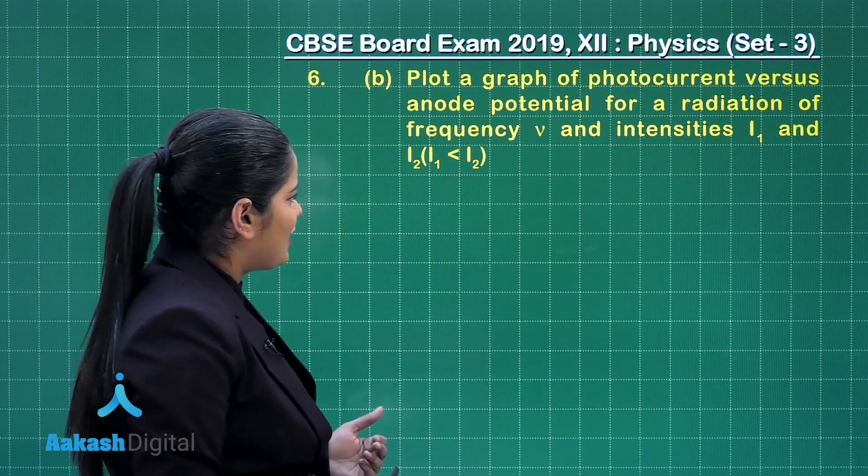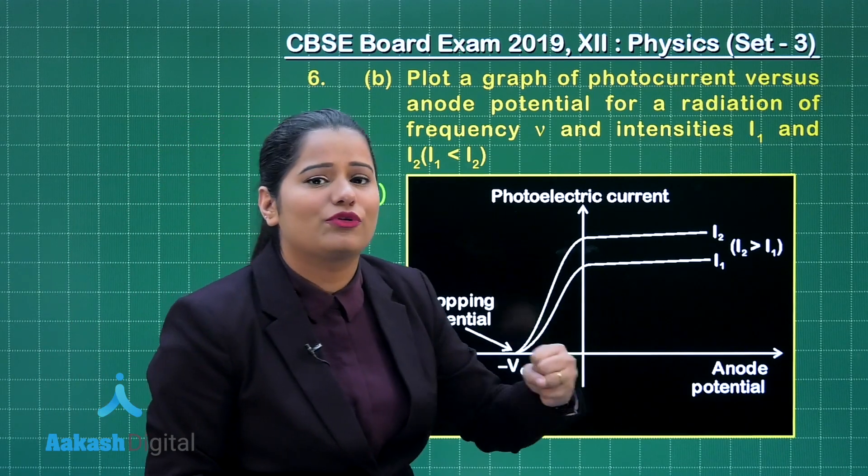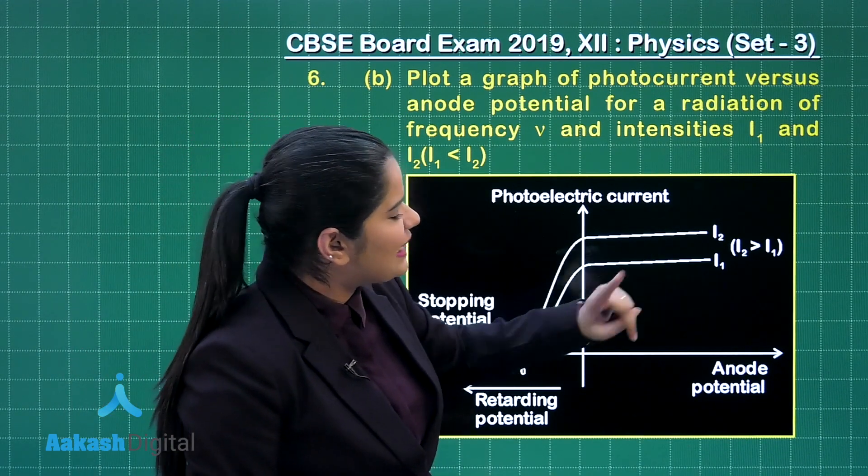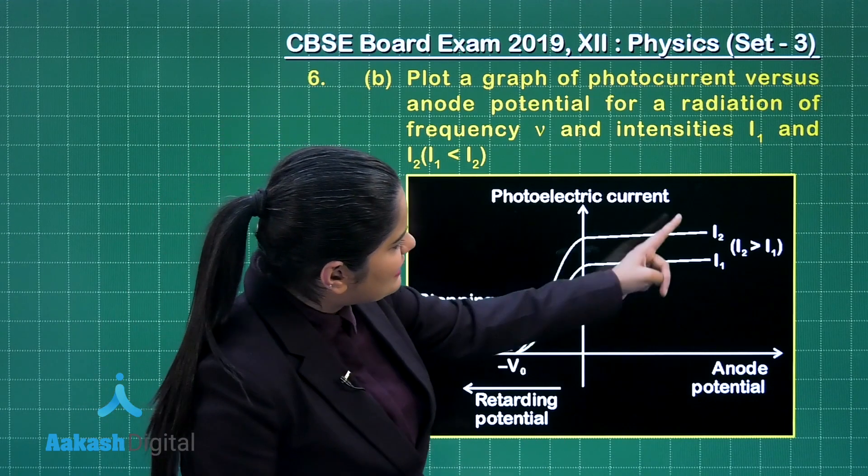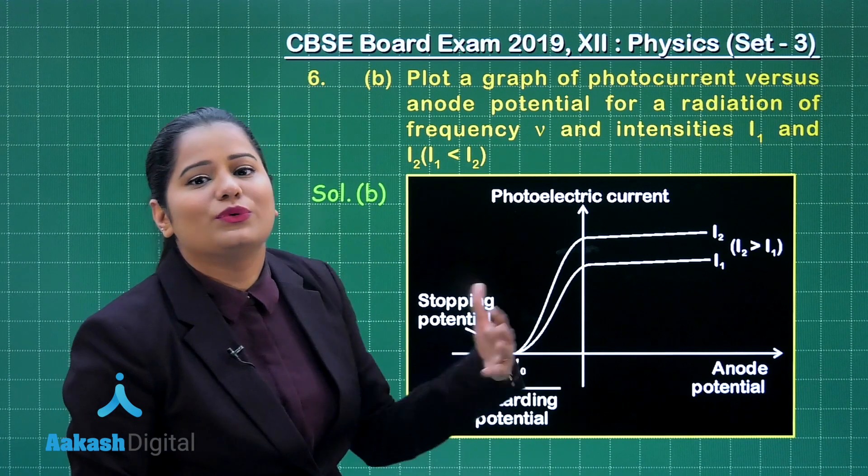Let us see what you had to draw. So this is the graph which is expected from you to draw. In this graph you can see this is drawn for two intensities I₁ and I₂ and you can clearly see here that as the intensity is increasing, the photoelectric current is also increasing.